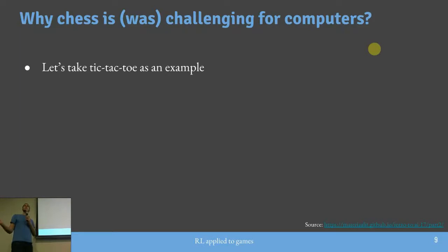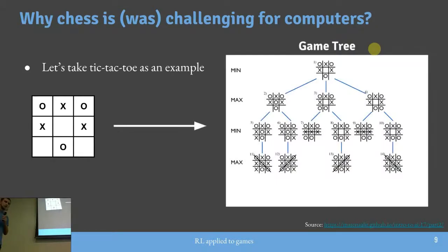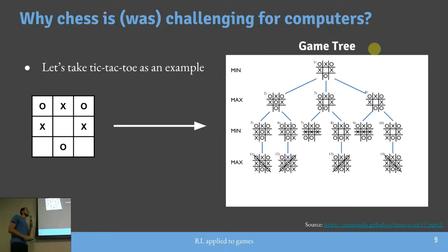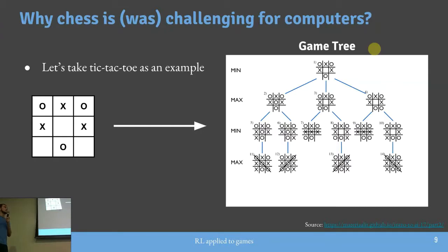Para entender como se atacou esse problema, vejamos o exemplo do jogo da velha. É comum usar uma Game Tree: pegar o estado atual e expandir os movimentos disponíveis. Isso é o que se chama de algoritmo MinMax — eu tenho dois jogadores, um tentando maximizar seu score e o outro tentando minimizar. Expande-se os movimentos possíveis, analisa-se alguns passos à frente e toma-se a decisão do melhor movimento considerando o adversário.